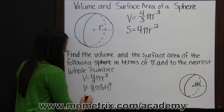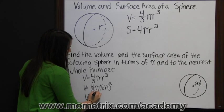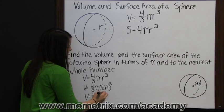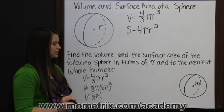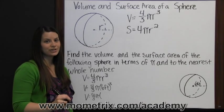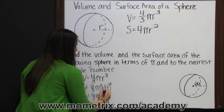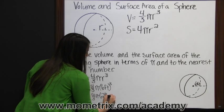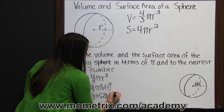So the volume is four-thirds times pi times six feet cubed. Six times six is 36, times six is 216 feet cubed.